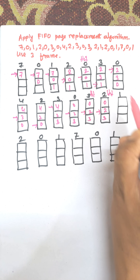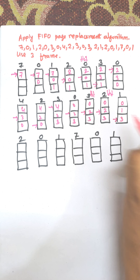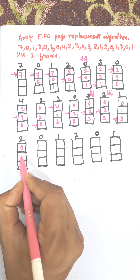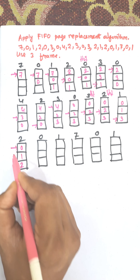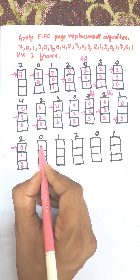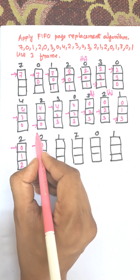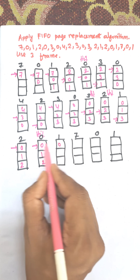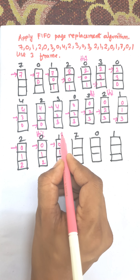Now page 1 needs to be placed: replacing the target gives frames 0, 1, and 3. Next, page 2 comes in: 0 is replaced, giving 2, 0, 1. Page 0 is already available so it is a hit and the pointer remains the same. Then page 1 is also already available in memory, so this is also a hit.